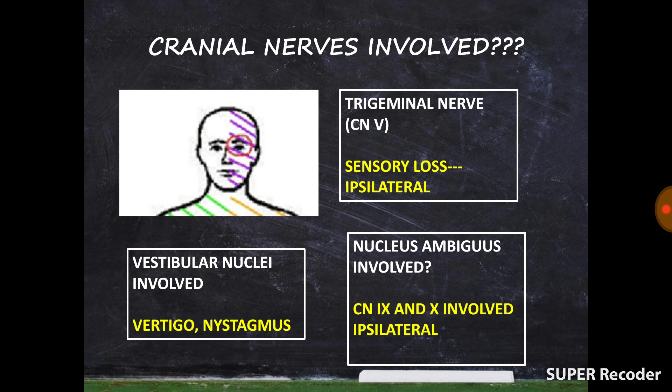Regarding cranial nerve involvement: first, the fifth cranial nerve spinal nucleus is involved. Because the trigeminal nerve does not decussate, loss of sensations will be on the same side — in this case the left side — with loss of touch and pain on the left half of the face. Next, the vestibular nucleus is involved; because there is no decussation, there is nystagmus and vertigo on the same side.